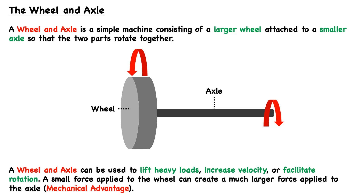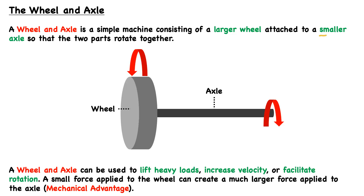In this video, we're going to talk about another simple machine, this time being the wheel and axle, or a wheel and axle system. In a wheel and axle, it consists of two main components: a larger wheel, which is attached to a smaller axle, so that the two parts rotate together.